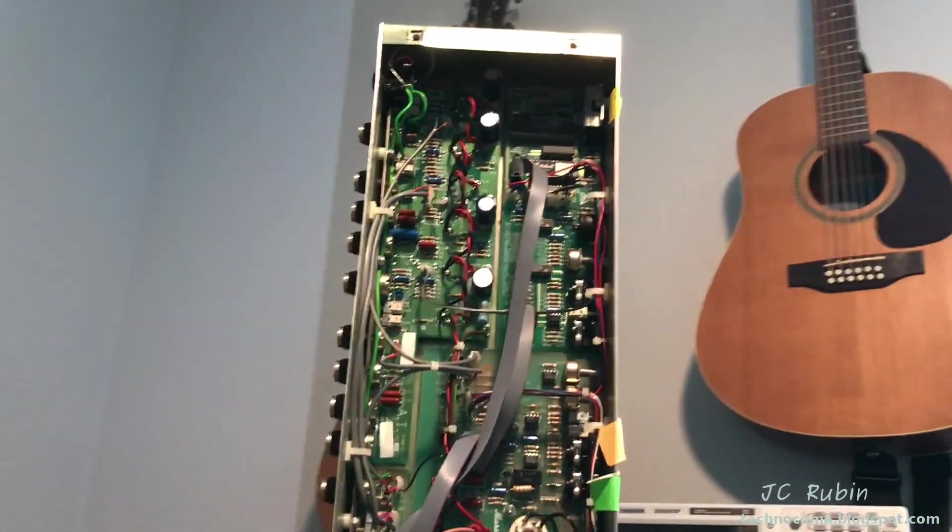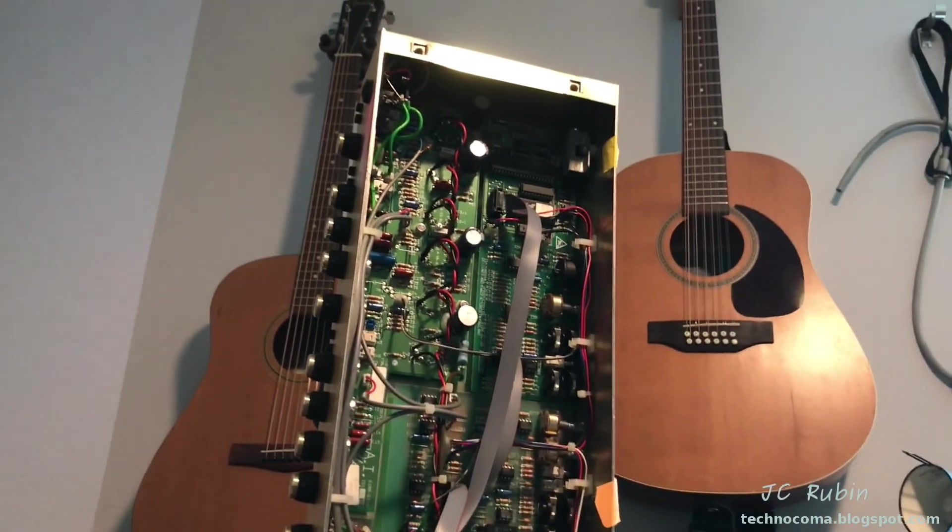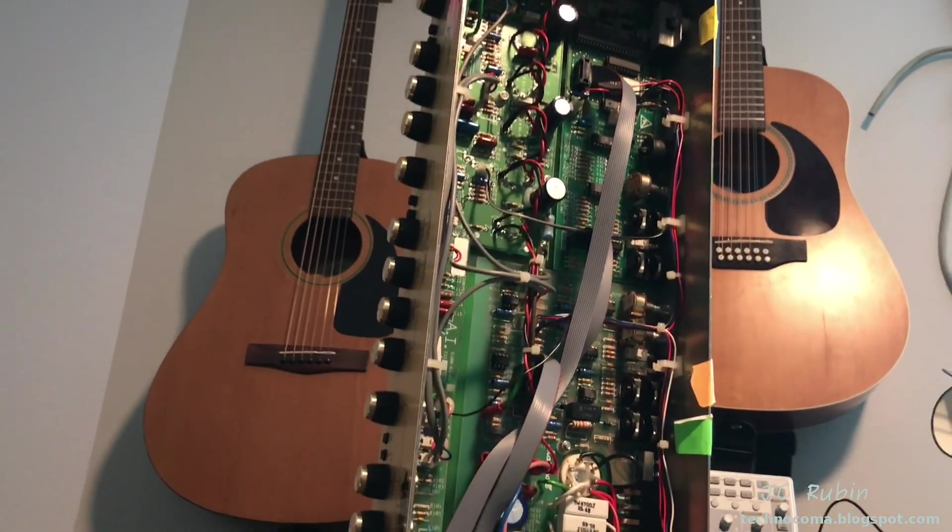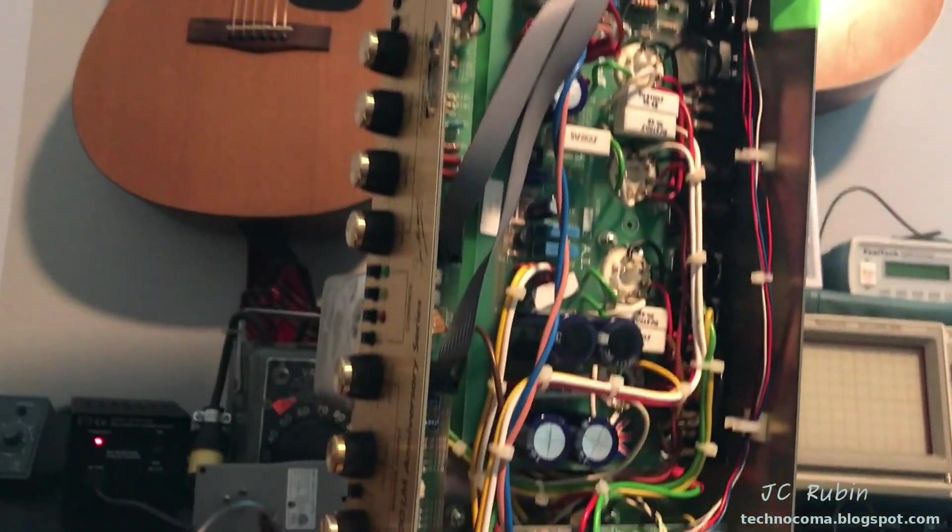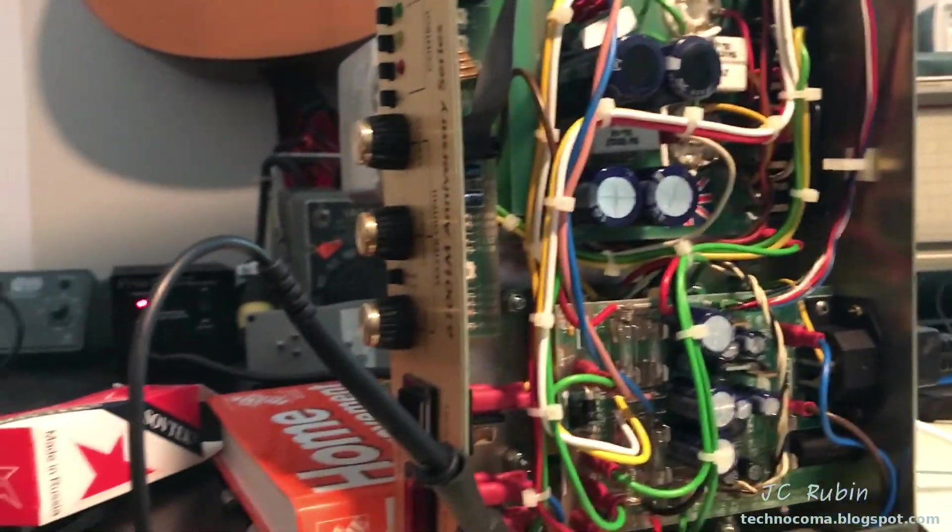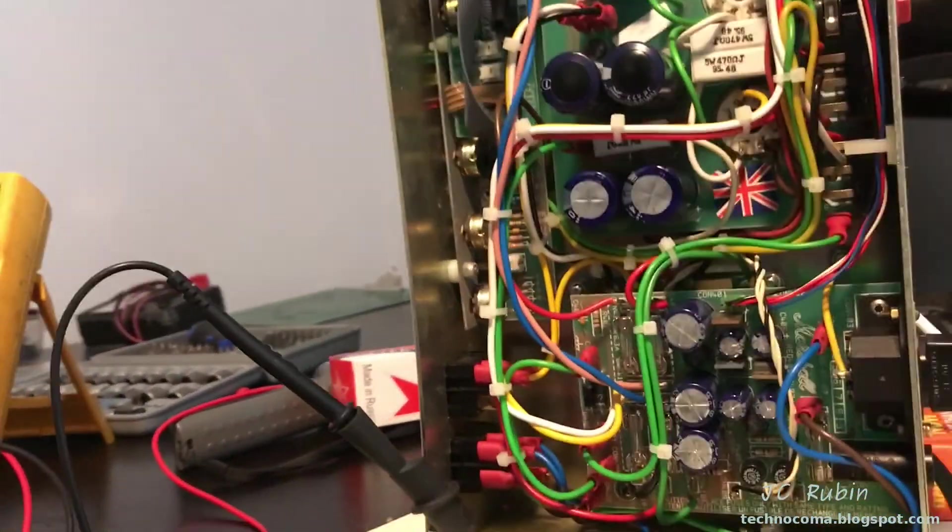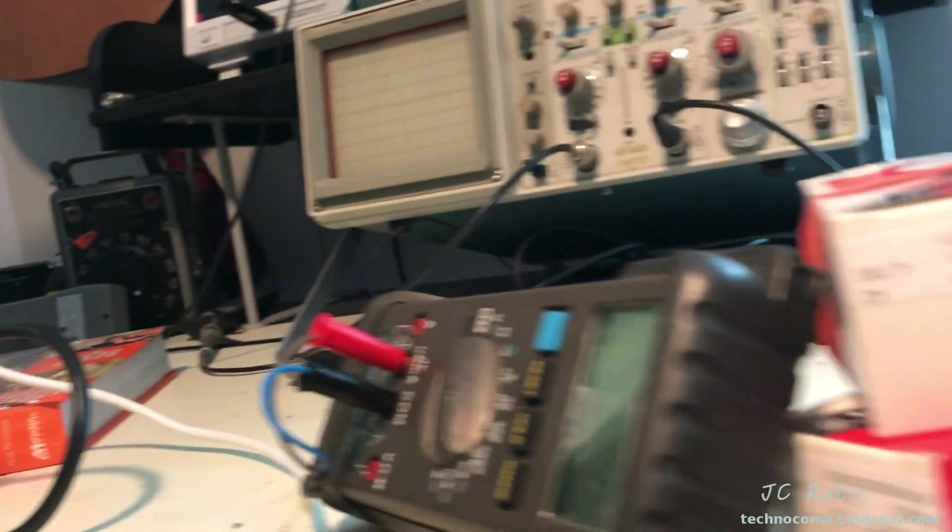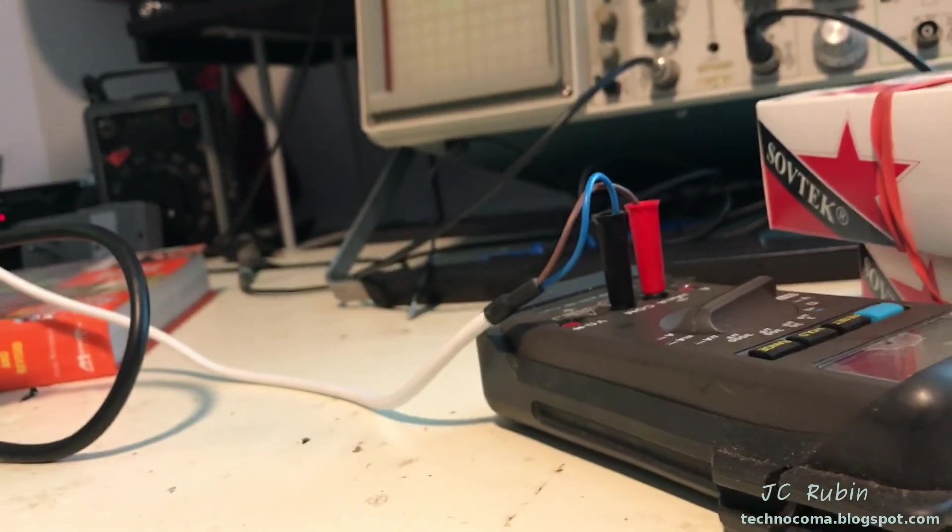Straight out of nowhere this Marshall appeared on my workbench. It looks like we're going to do a biasing of this 6100 LM Anniversary Series unit. This had some 6L6s in there and we're going to be putting these Sovtek 5881s in there, but we're going to bias it properly.